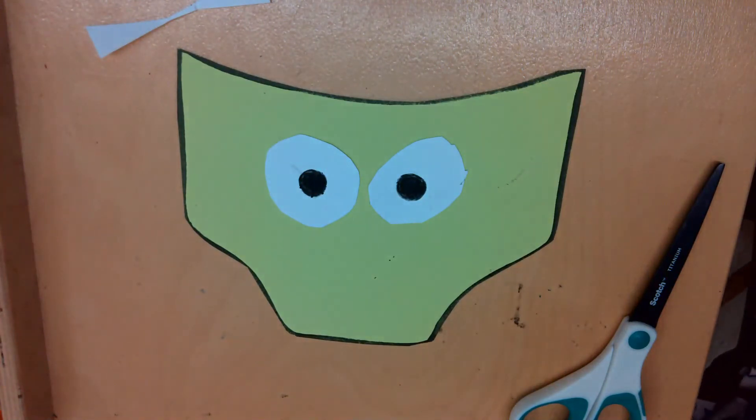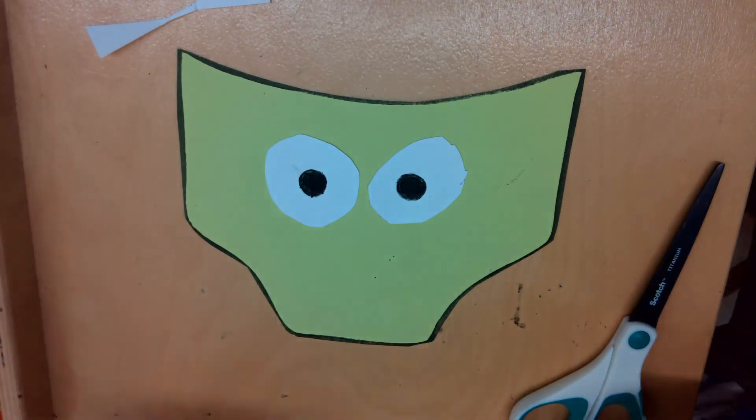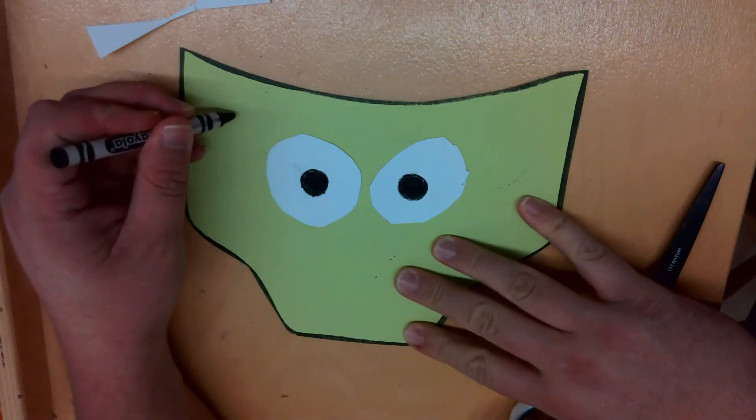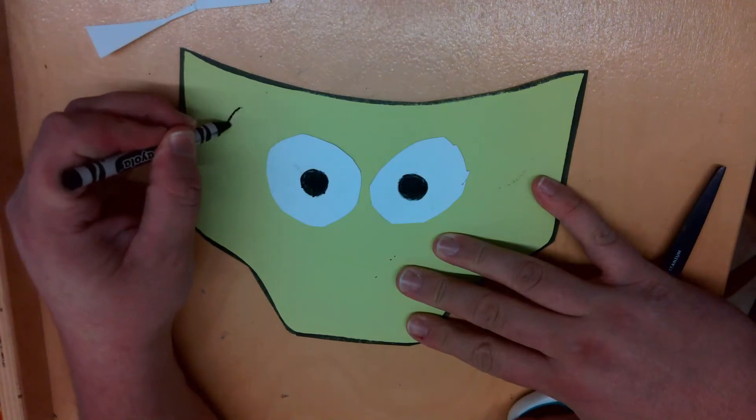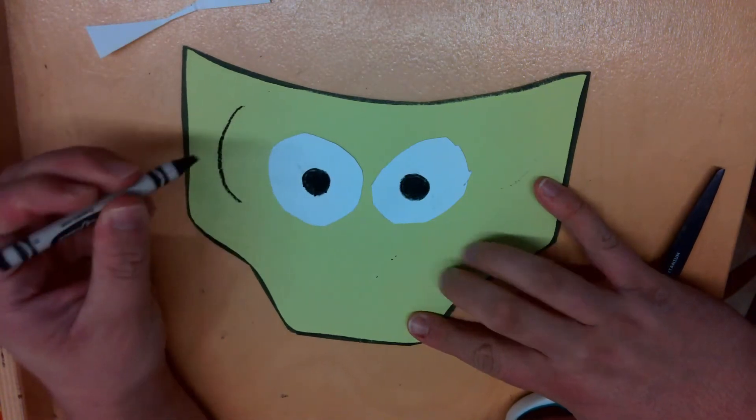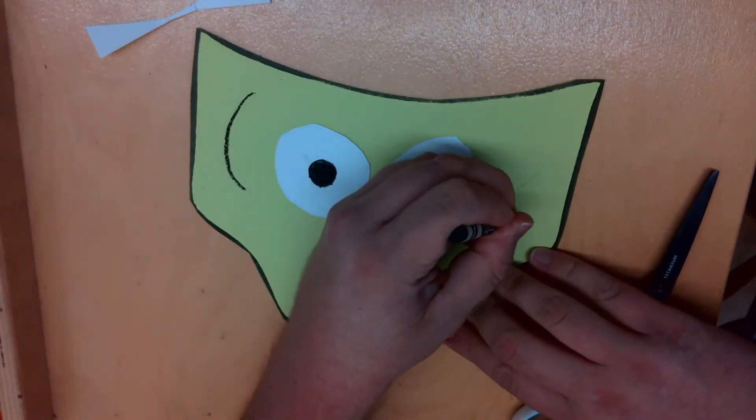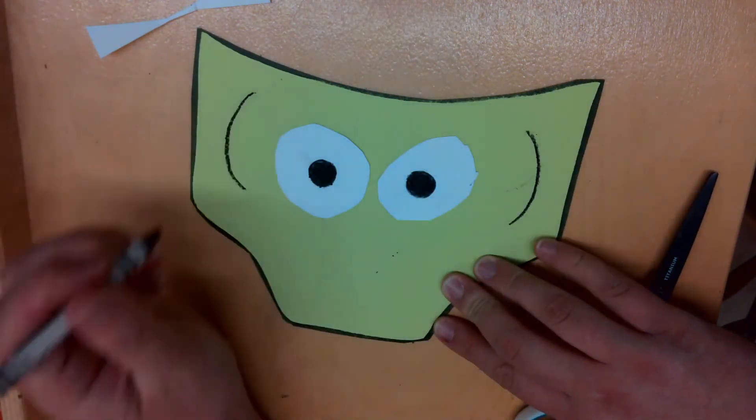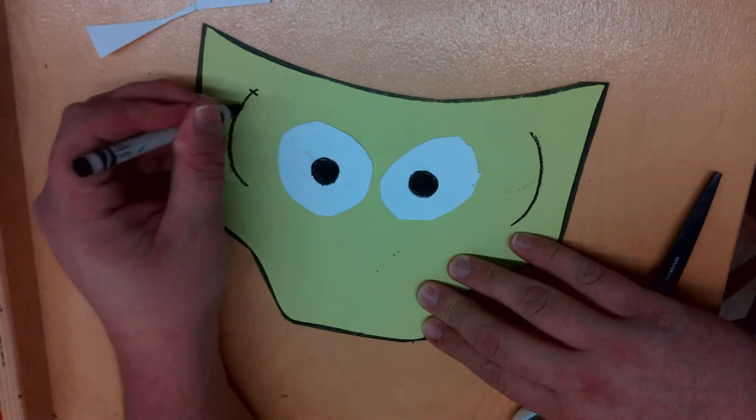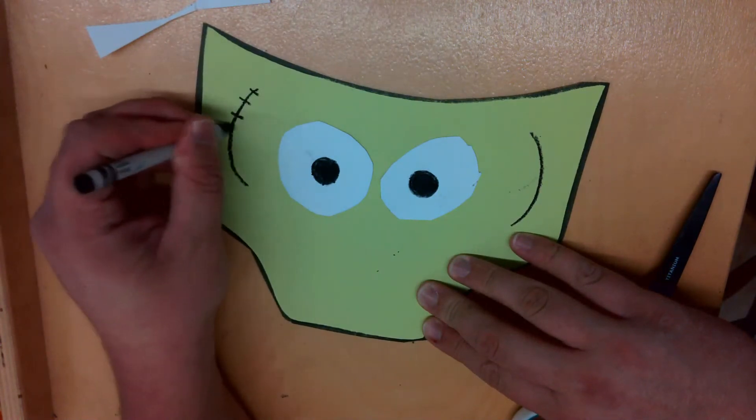Okay, up next, we're going to put some scars on the creepy pair of underwear. So to do that, we're going to make a curved line on the outsides of the eyes, mirroring the eyes, and then we're going to draw straight lines going across all the way down, putting some space in between those lines.